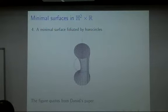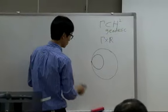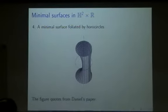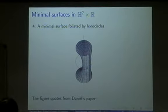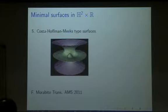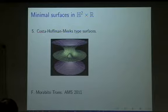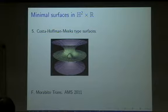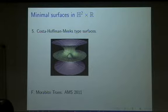The height of the ideal boundary of the horocircle example cannot exceed π. Recently, Filippo Morabito constructed a Costa-Hoffman-Meeks type surface in H² × ℝ. We already know the classical examples in Euclidean space, and he, using a gluing method, constructed this example in H² × ℝ.